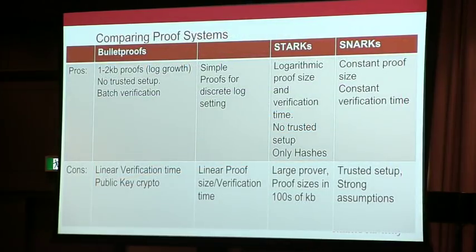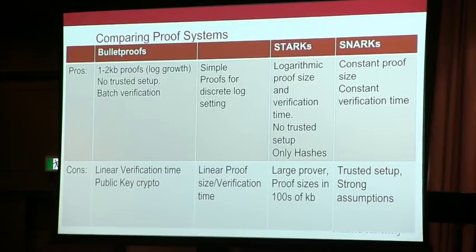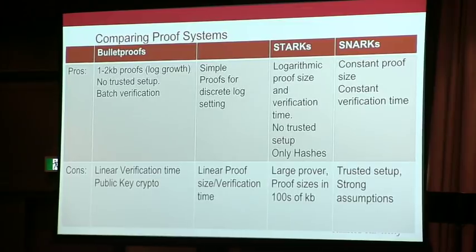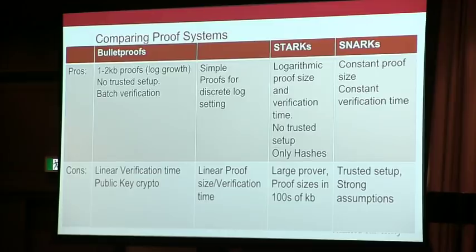Let's compare the different proof systems. We have Bulletproofs and Sigma protocols. The benefits of Bulletproofs are that they're pretty short, they have no trusted setup, and you can do batch verification. However, the downside is linear verification time. Comparing to SNARKs: SNARKs have better proof size and better verification time, but have the downside of the trusted setup and slightly stronger assumptions.